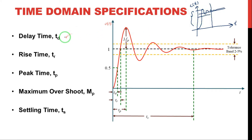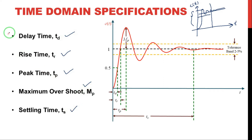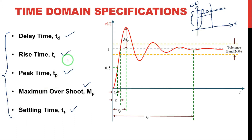The time domain specifications are: delay time, rise time, peak time, maximum peak overshoot, and settling time. We need to know these specifications because by knowing them we can control the transient response by using controllers. We will learn about controllers in the next further classes.